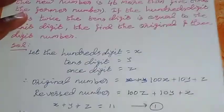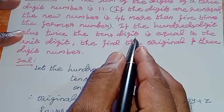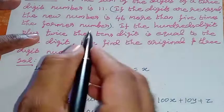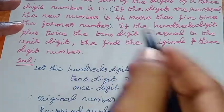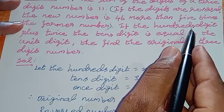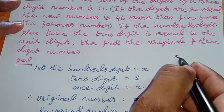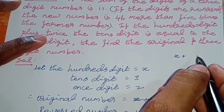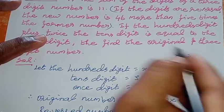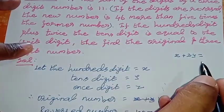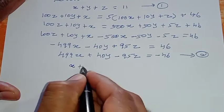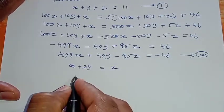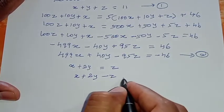Next, the third equation. If the hundreds digit plus twice the tens digit is equal to the units digit — that is, x plus 2y is equal to z — then x plus 2y minus z is equal to 0. This is the third equation.